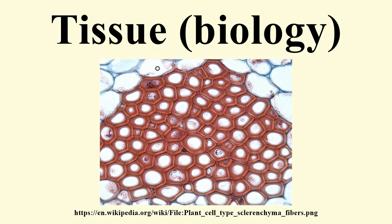Cells comprising the central nervous system and peripheral nervous system are classified as neural tissue. In the central nervous system, neural tissue forms the brain and spinal cord. In the peripheral nervous system, it forms the cranial nerves and spinal nerves, inclusive of the motor neurons.